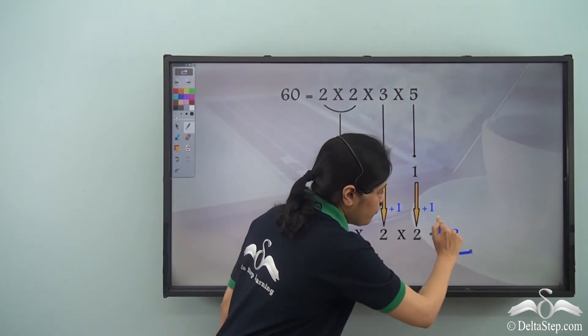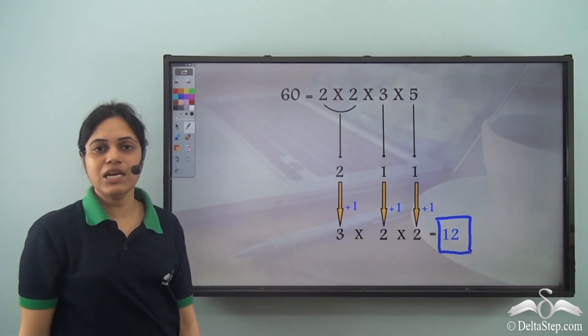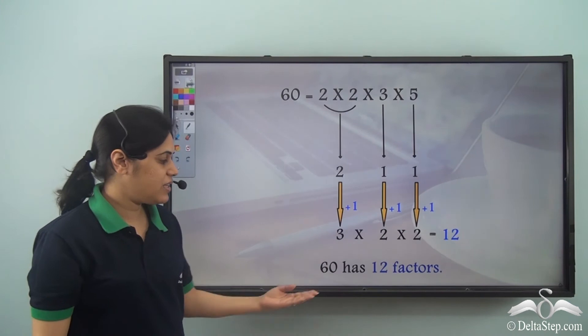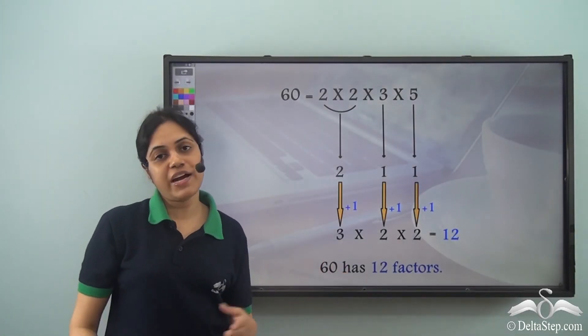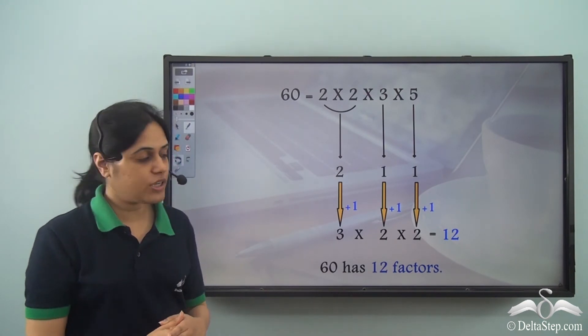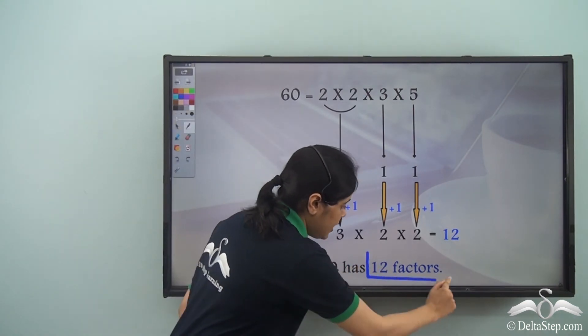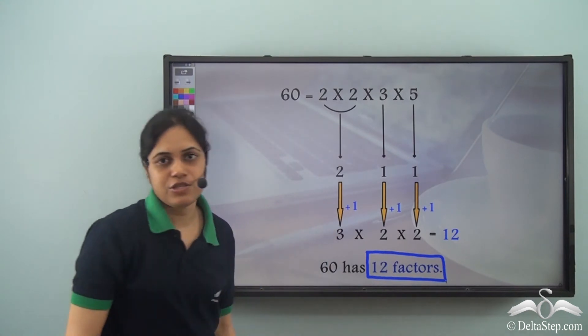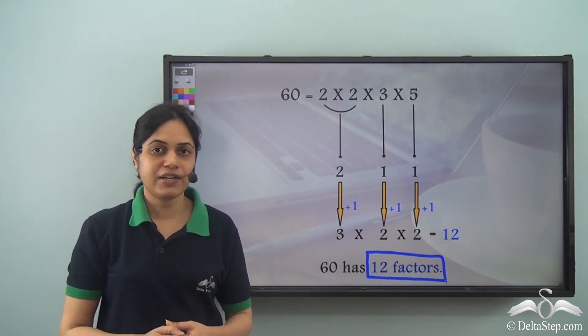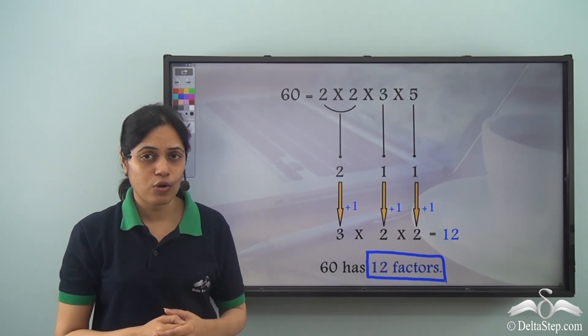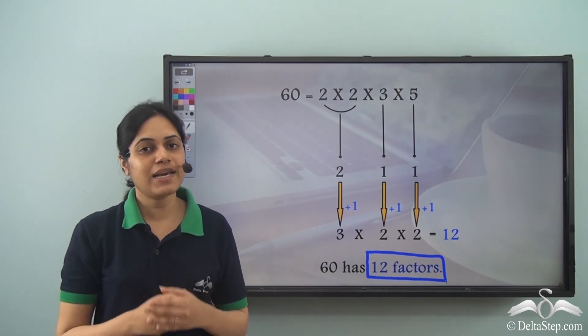So if I go on to find the factors of 60, I will see that there are 12 factors. So when you are told to find all the factors of 60, you should get exactly 12 factors - not more, not less. If you have not got 12 factors, that means you are doing something wrong, so you need to do it again.